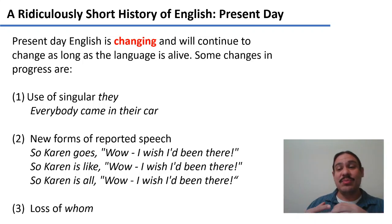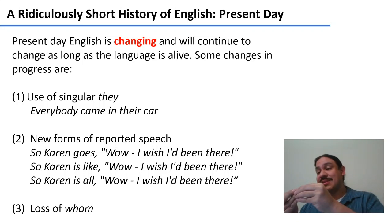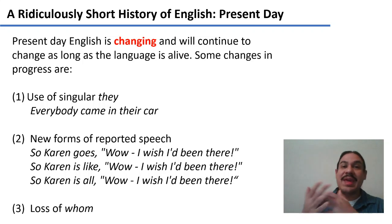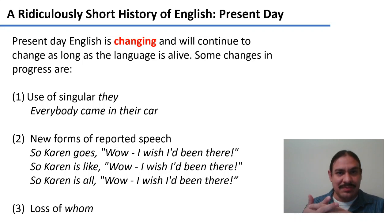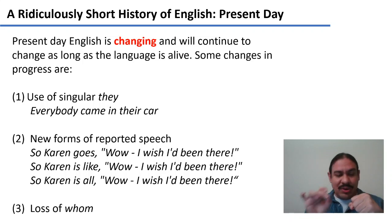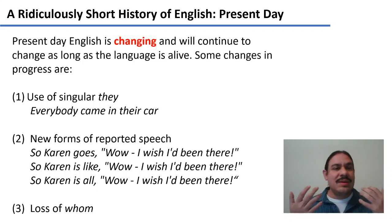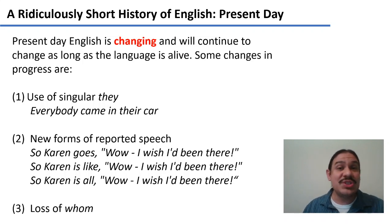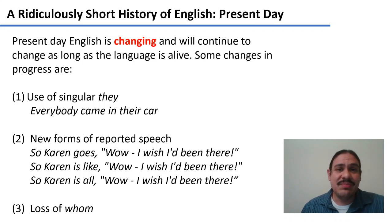Even to this day, English is changing and will continue to change. One example of how English is different from the English of your parents or grandparents is that you can now use 'they' as a singular. So the sentence 'everybody came in their car' in the 21st century means people came in the cars belonging to each of them, whereas for your grandparents this would have meant something more like a plural meaning.